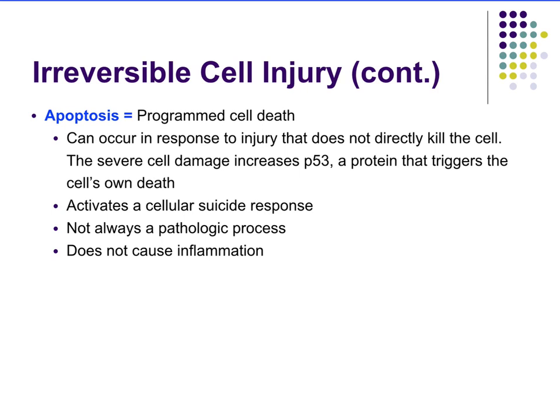Apoptosis is actually a normal process for cells to die — programmed cell death. When cells get injured but not necessarily killed, they may activate a suicide response because an injured cell is probably not functioning well, so it sacrifices itself to avoid causing more injury to surrounding tissue. Severe cell damage can increase a protein called P53, which triggers this suicide response. Apoptosis is not always pathologic — it can be completely normal — and it does not cause inflammation.